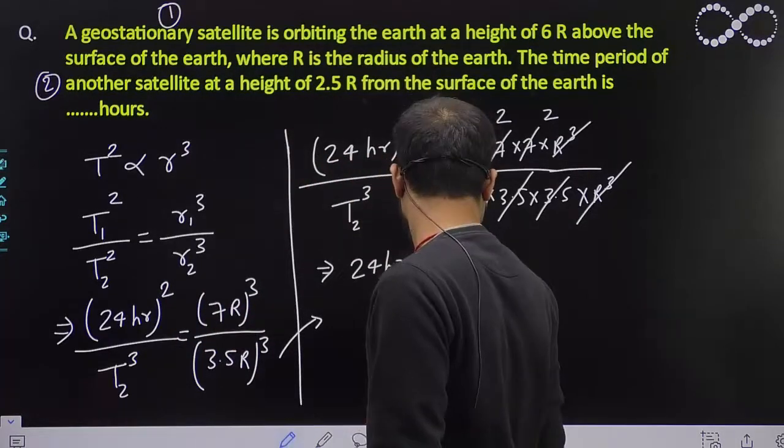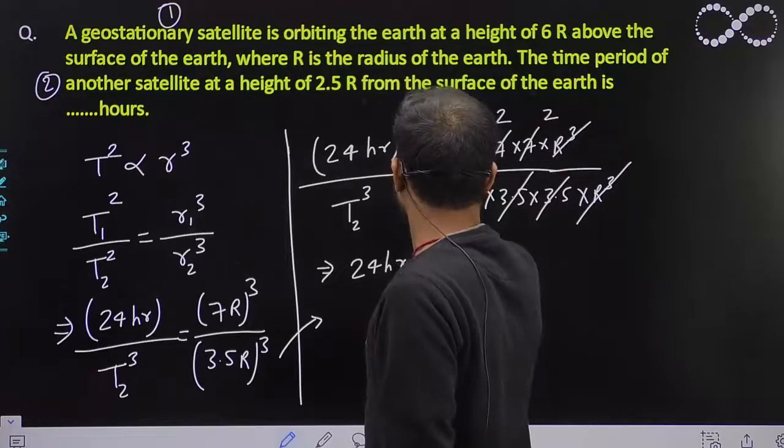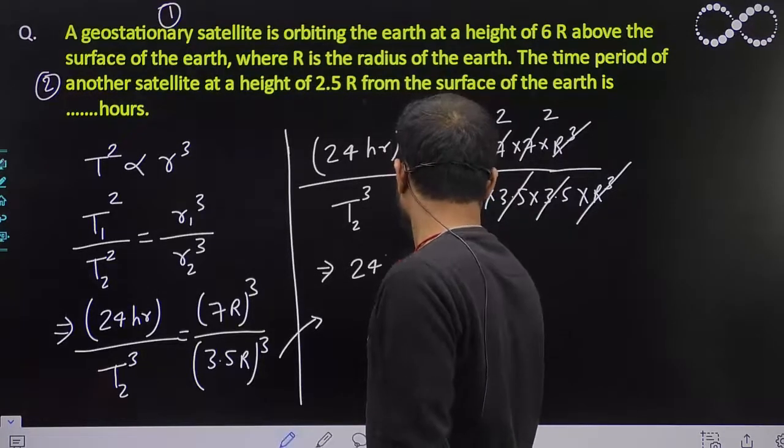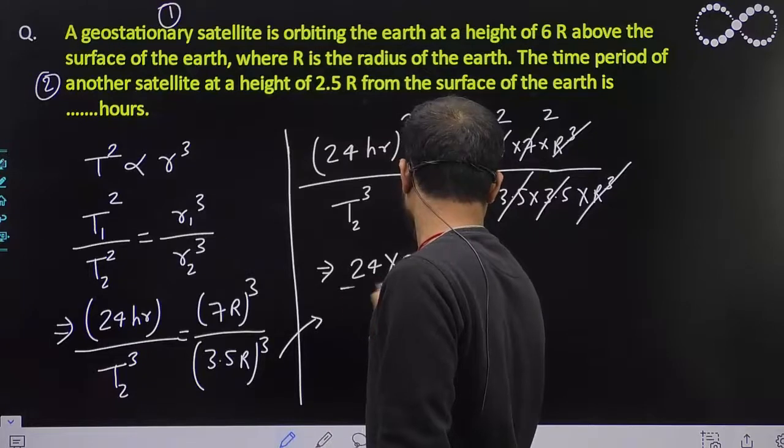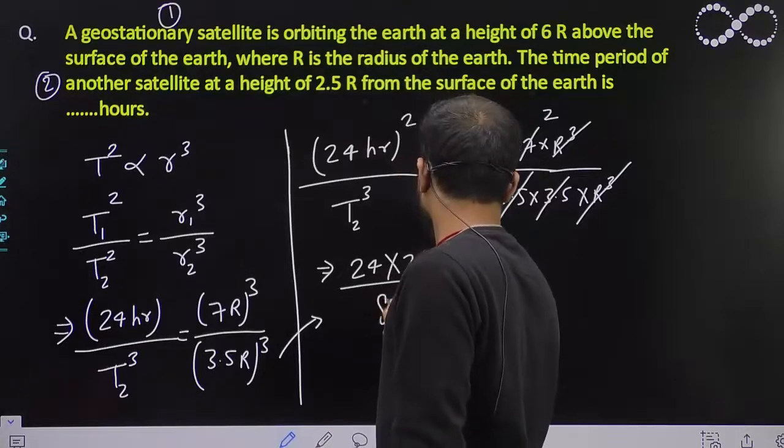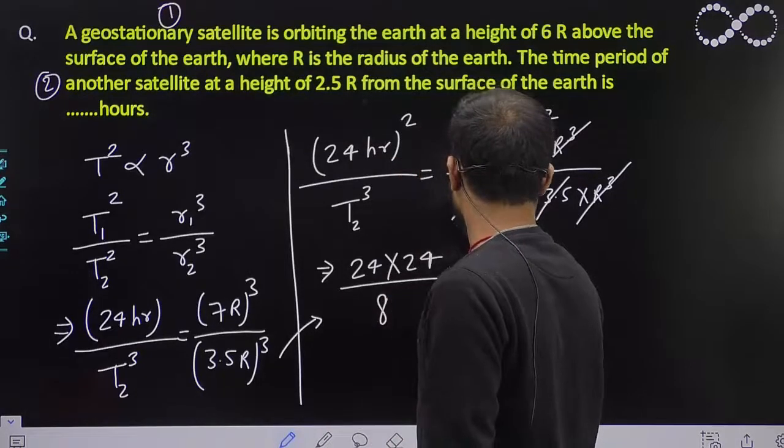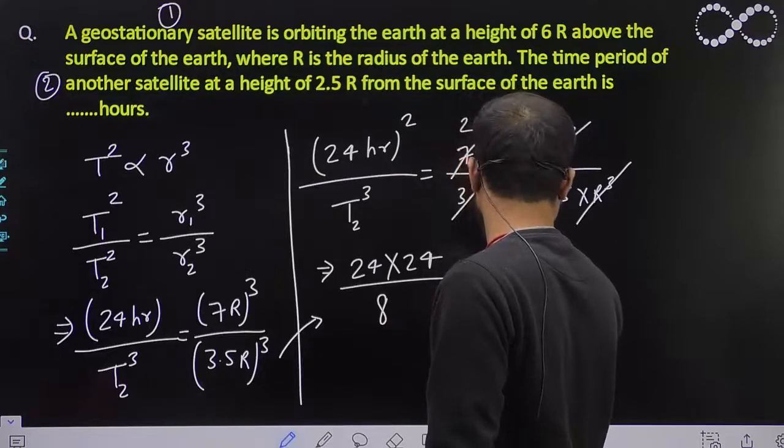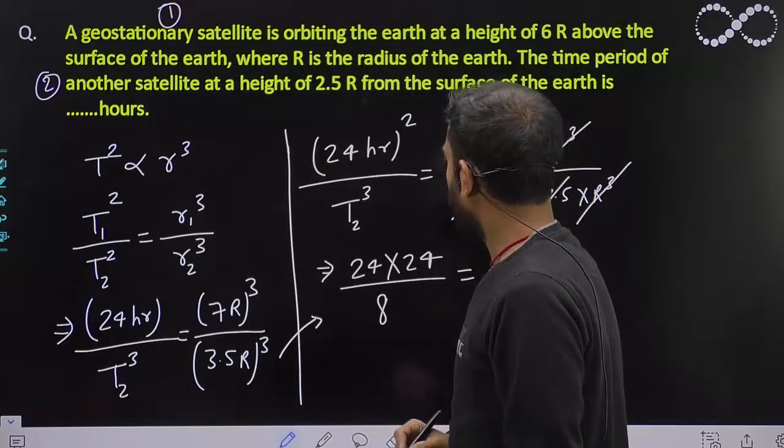If you can say 24, you can say this will be 24 into 24 divided by this will become 8 here, and that is T2 squared right, everything is okay right.